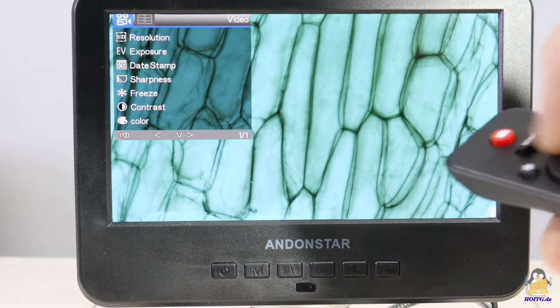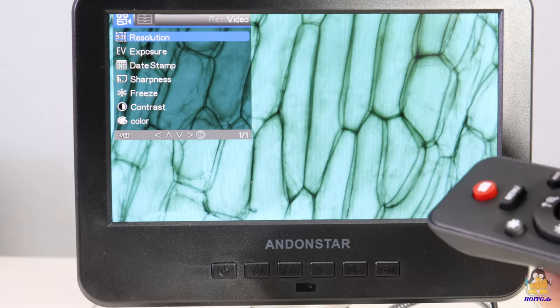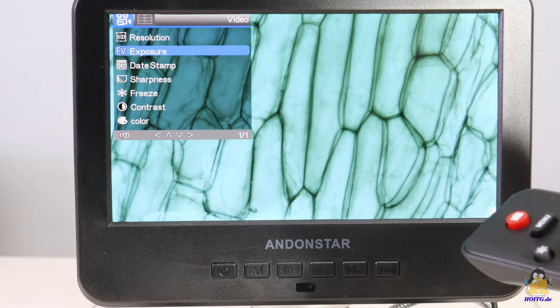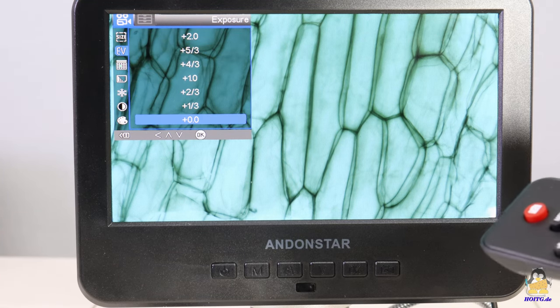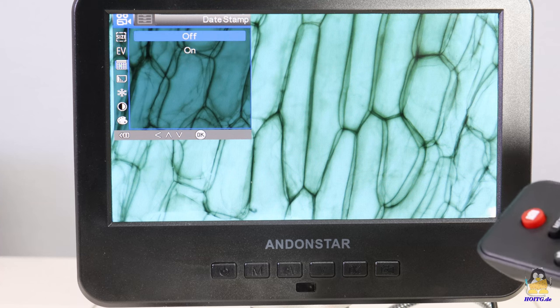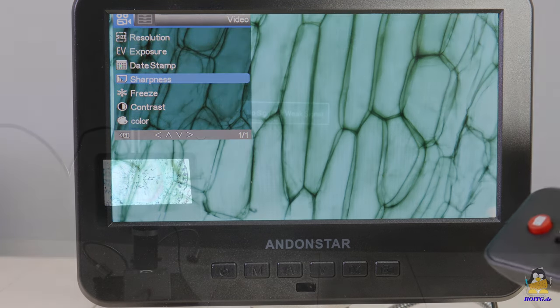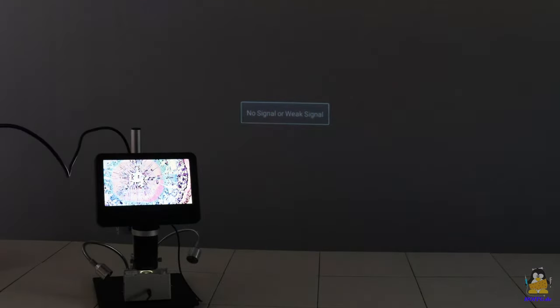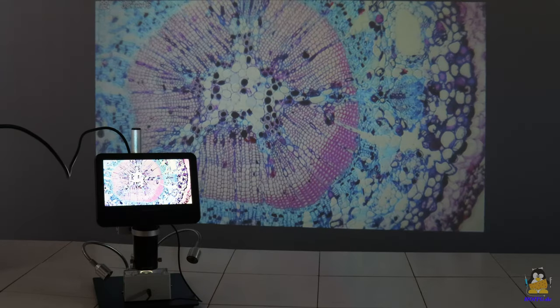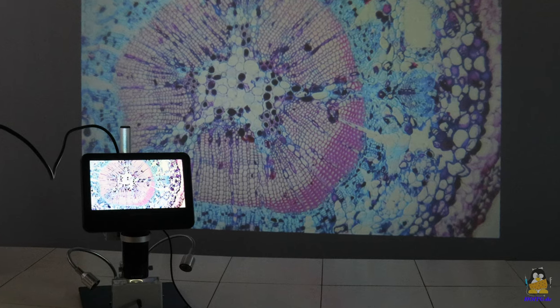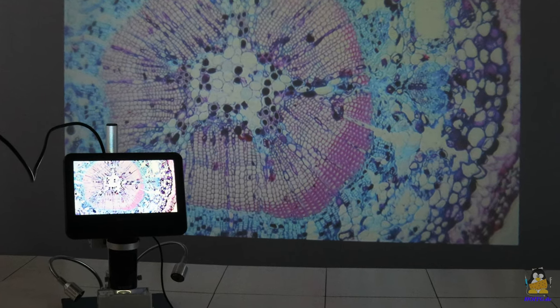Not only can still images and video sequences be recorded by remote control, but all settings can also be made. If the 7 inch screen is too small for you, you can connect a larger monitor or a projector via the HDMI interface. The microscope is therefore also suitable for presentations in front of a larger audience.